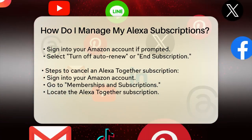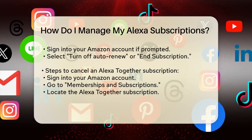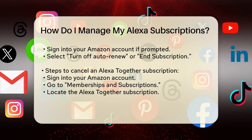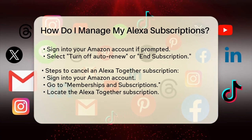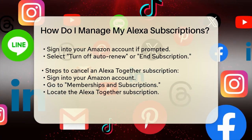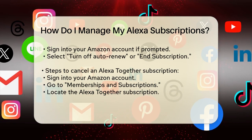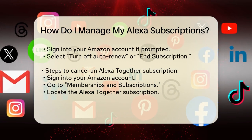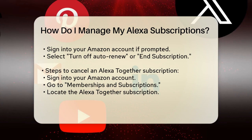Choose the skill with the subscription you want to cancel. Tap on the skill with the subscription and select Manage Subscriptions. If prompted, sign into your Amazon account. Select Turn off Auto Renew or End Subscription to cancel it.